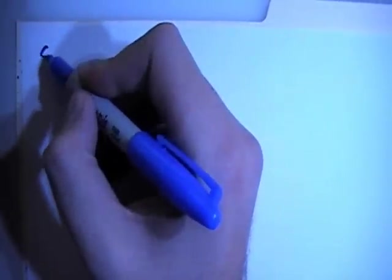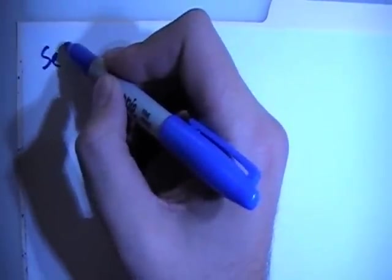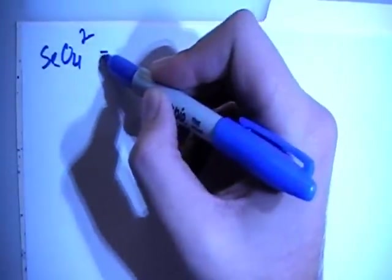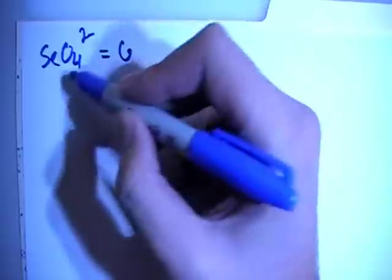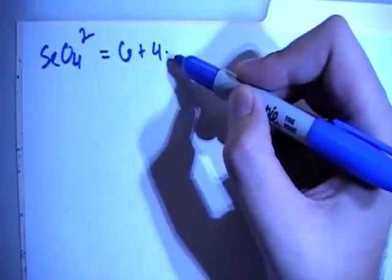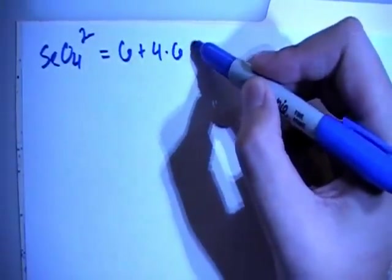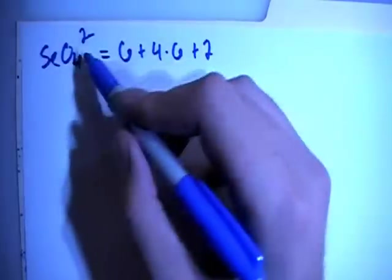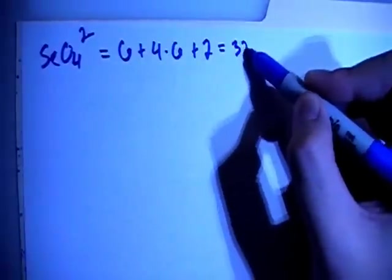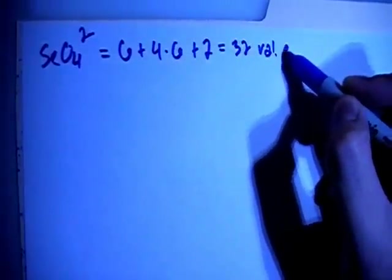The selenate ion is SeO4 with a negative 2 charge. That's going to give us 6 valence electrons from the selenium plus 4 oxygens each with 6 valence electrons plus 2 more electrons from the negative 2 charge for a total of 32 valence electrons.